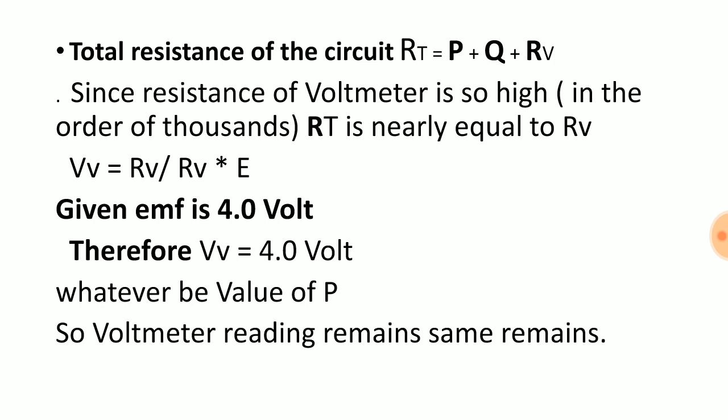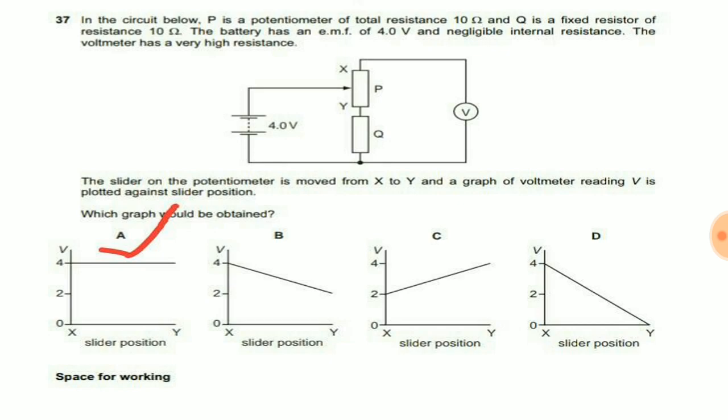Because P and Q are so less they can be neglected, our answer choice A is the right answer because this diagram shows that voltage is remaining the same. On changing the position, this diagram is saying that voltage is constant.